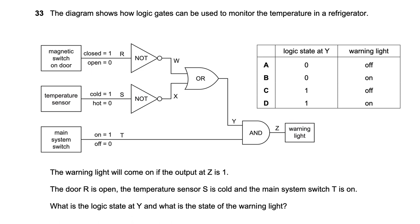Question thirty-three involves an AND gate and input from a door sensor R, temperature sensor S, and main system switch T. The warning light comes on when output Z is one. The main system switch T being on means one input to the AND gate is one. An AND gate outputs one only when both inputs are one. The door R is open and the temperature S is cold, so the other input is also one. Option D is the right answer.